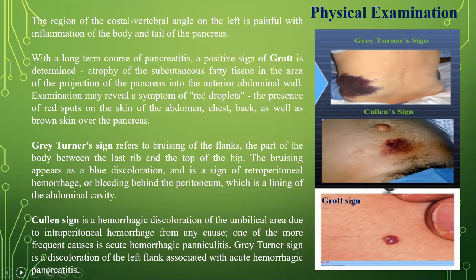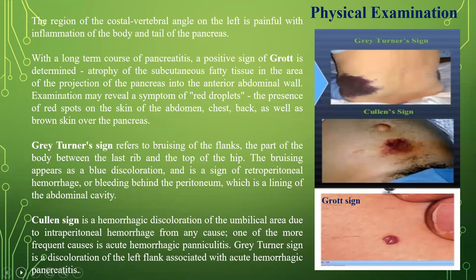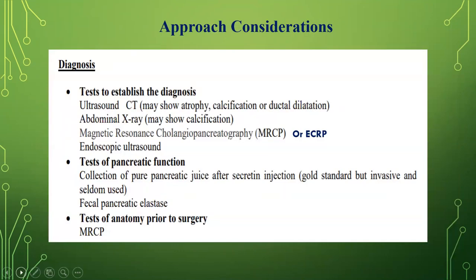Examination may reveal a symptom of red droplets — the presence of red spots on the skin of the abdomen, chest, and back — as well as brown skin over the pancreas. Grey Turner's sign refers to bruising of the flanks; it appears as a blue discoloration and is a sign of intraperitoneal hemorrhage or bleeding behind the peritoneum. Cullen's sign is hemorrhagic discoloration of the umbilical area due to intraperitoneal hemorrhage from any cause; one of the more frequent causes is acute hemorrhagic pancreatitis. Mondor's sign is associated with acute hemorrhagic pancreatitis or chronic pancreatitis complications.